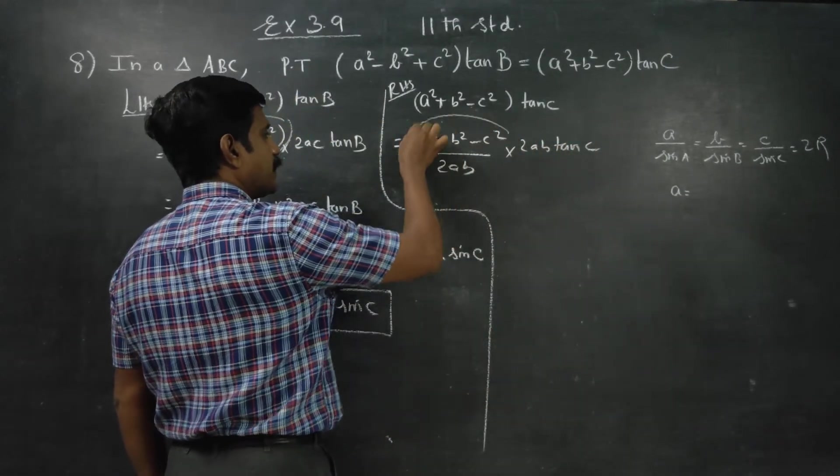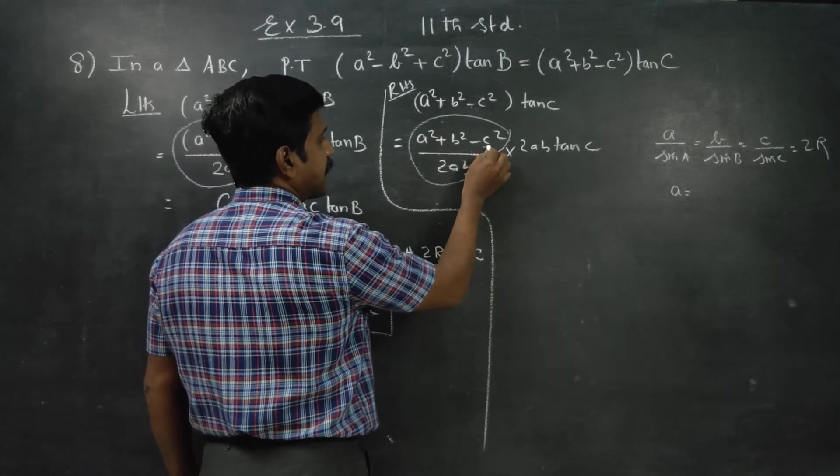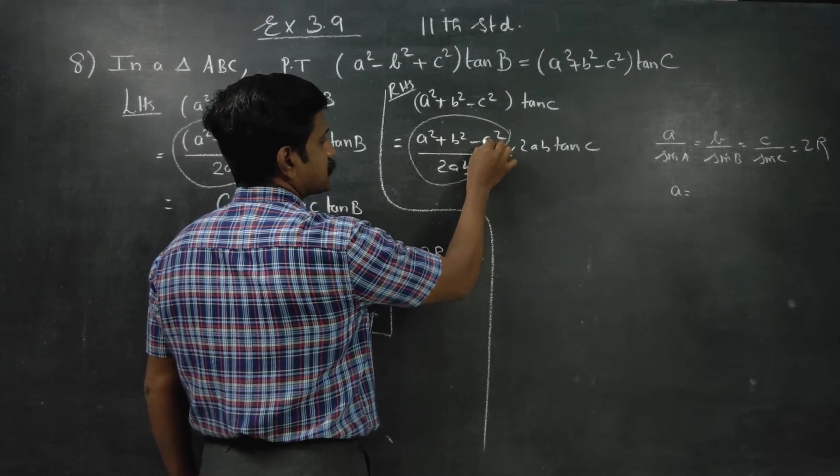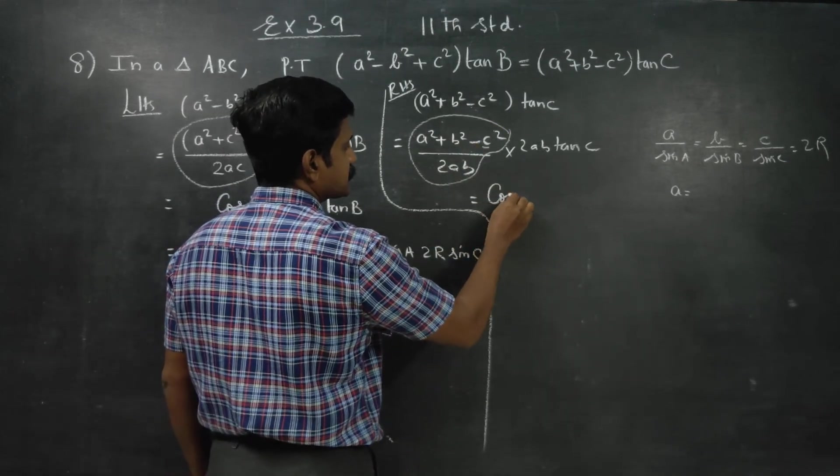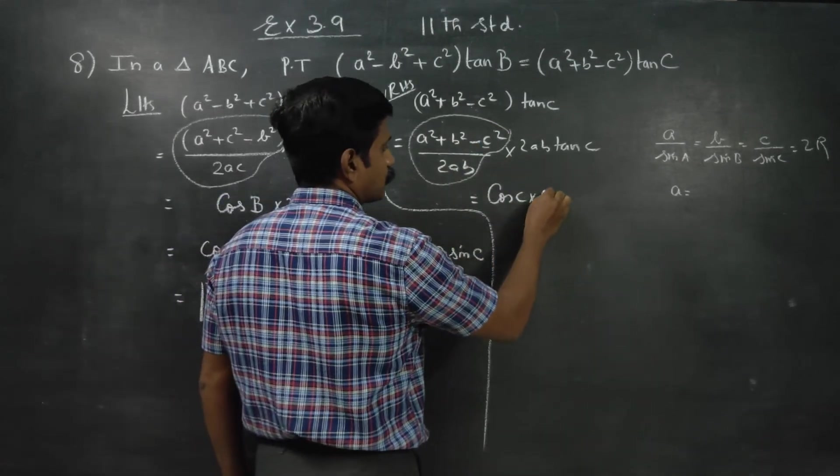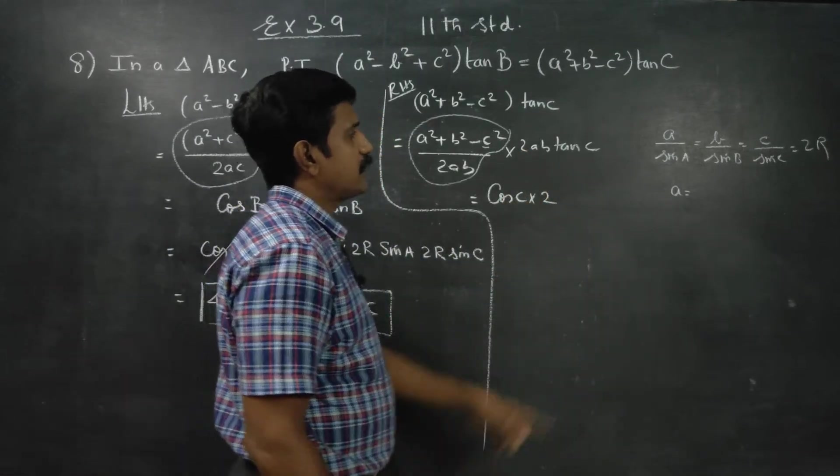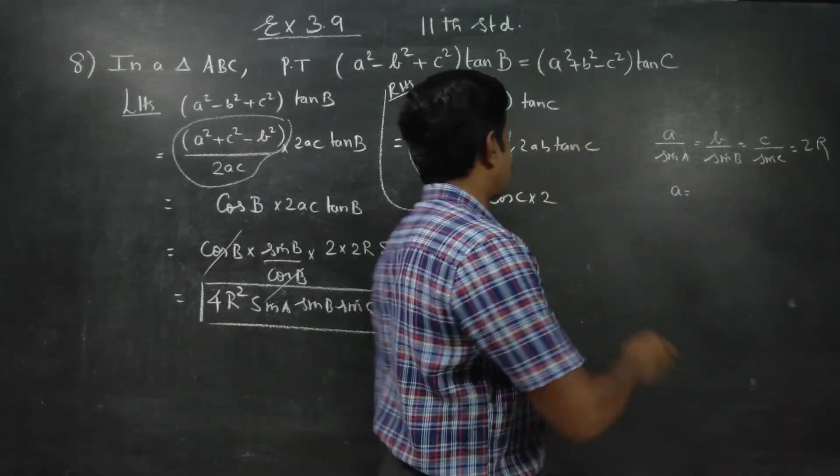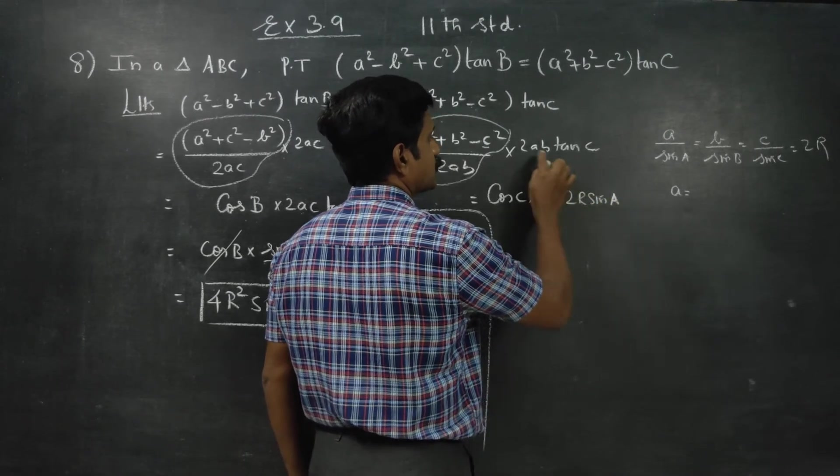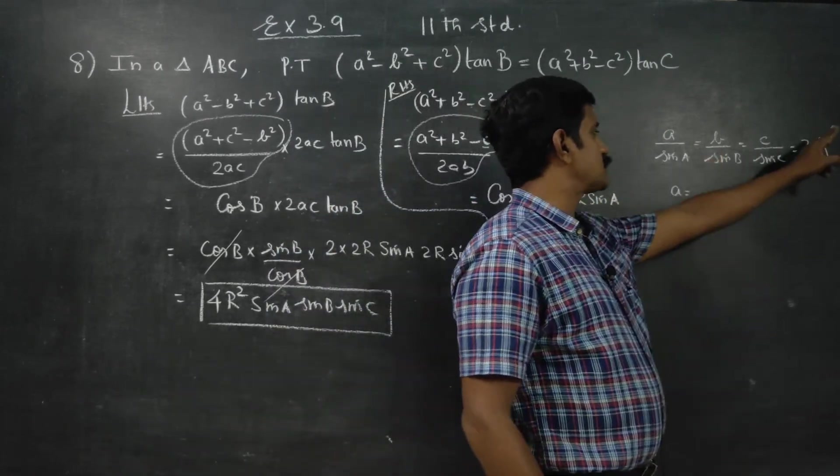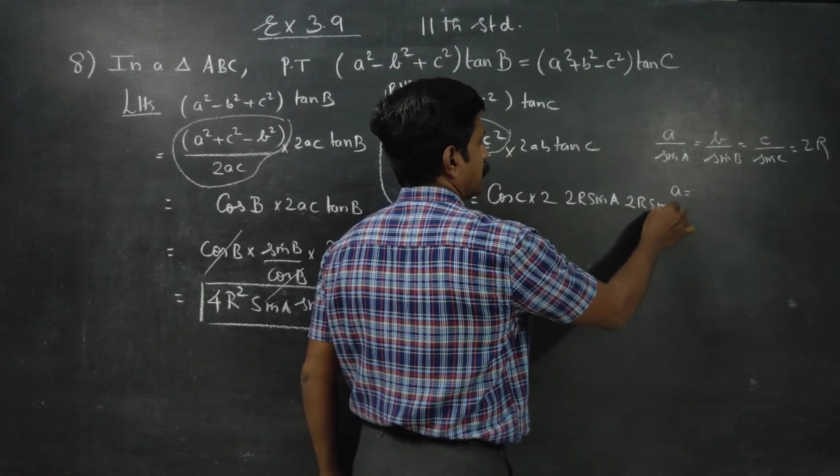This is a ready-made formula for cos C, because it's a cosine formula: A² plus B² minus C² by 2AB is cos C, into 2 times what is my A? A can be written as 2R sin A. What is my B? B can be written as 2R sin B.